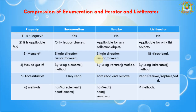Property — Accessibility: Enumeration allows only read operations. Iterator allows read and remove operations. ListIterator allows read, remove, replace, and add — four operations. Methods available: Enumeration has two methods — hasMoreElements() and nextElement(). Iterator has three methods — hasNext(), next(), and remove(). ListIterator has nine methods. In conclusion, in the Collection Framework three cursors are available: Enumeration, Iterator, and ListIterator.